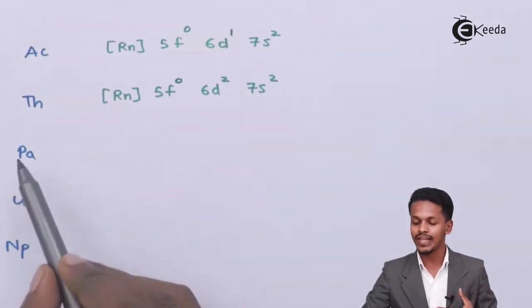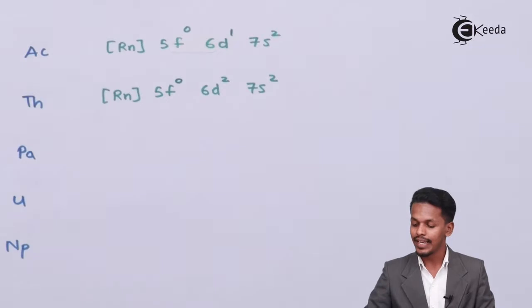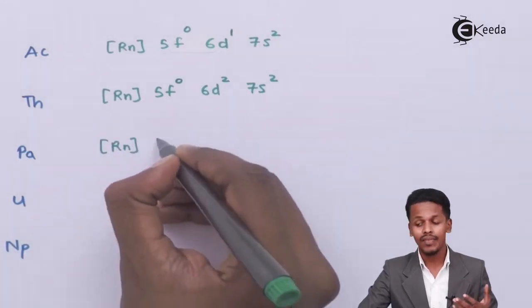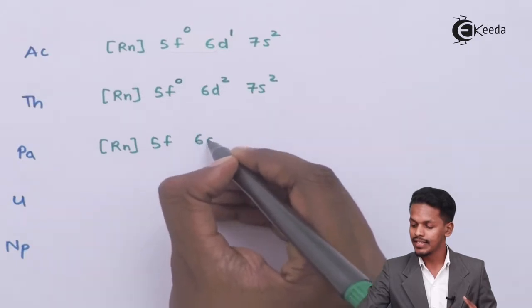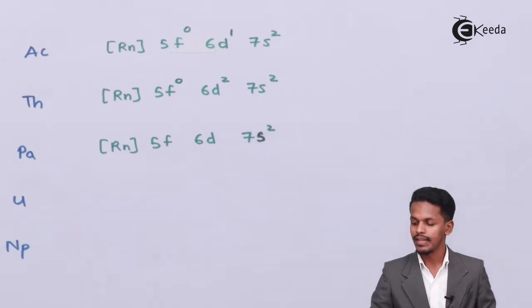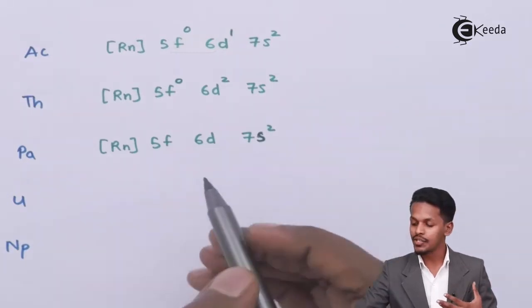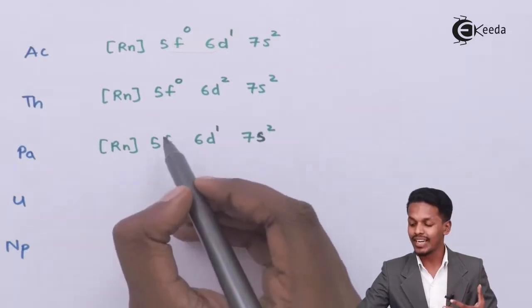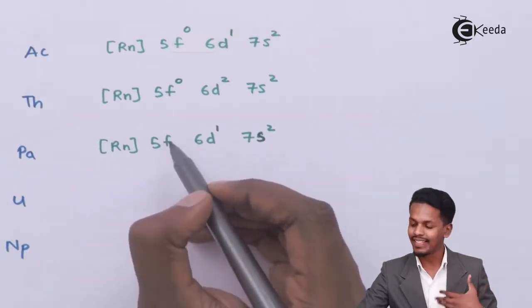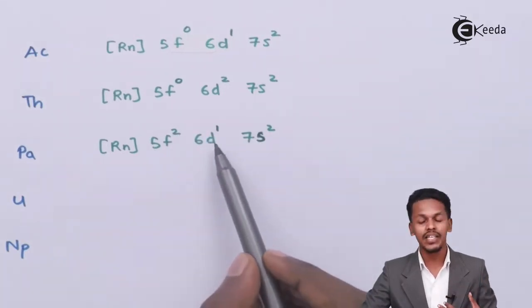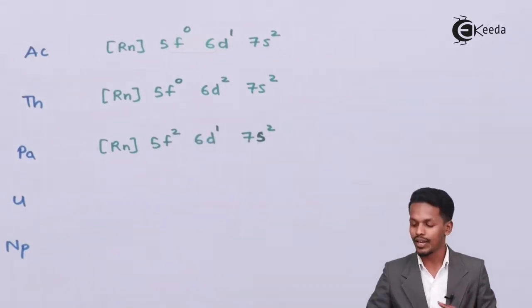For protactinium, the electronic configuration is [Rn] 5f² 6d¹ 7s². The d orbital consists of one electron, and the remaining electrons fill the f orbital, giving 5f² 6d¹ 7s².